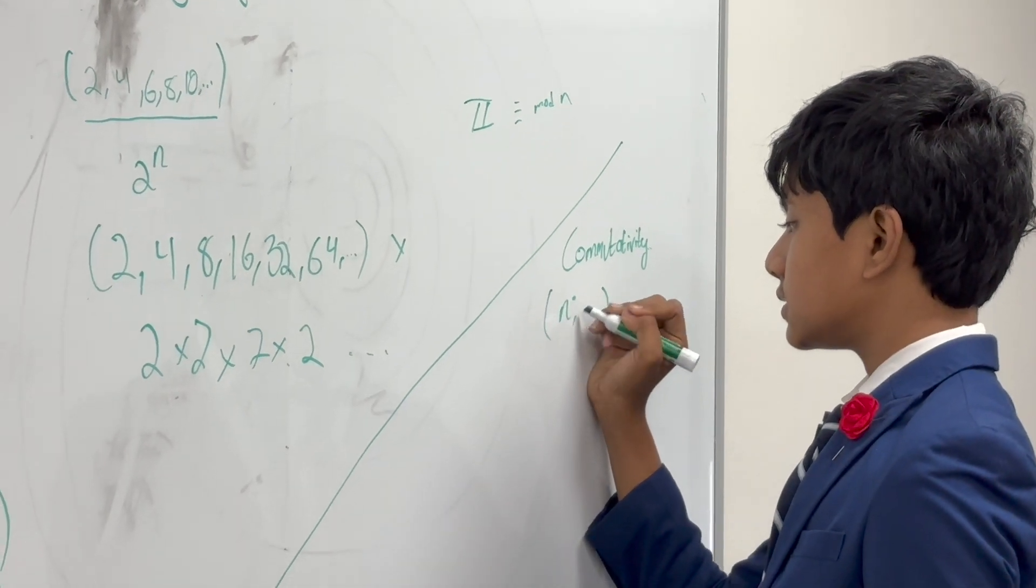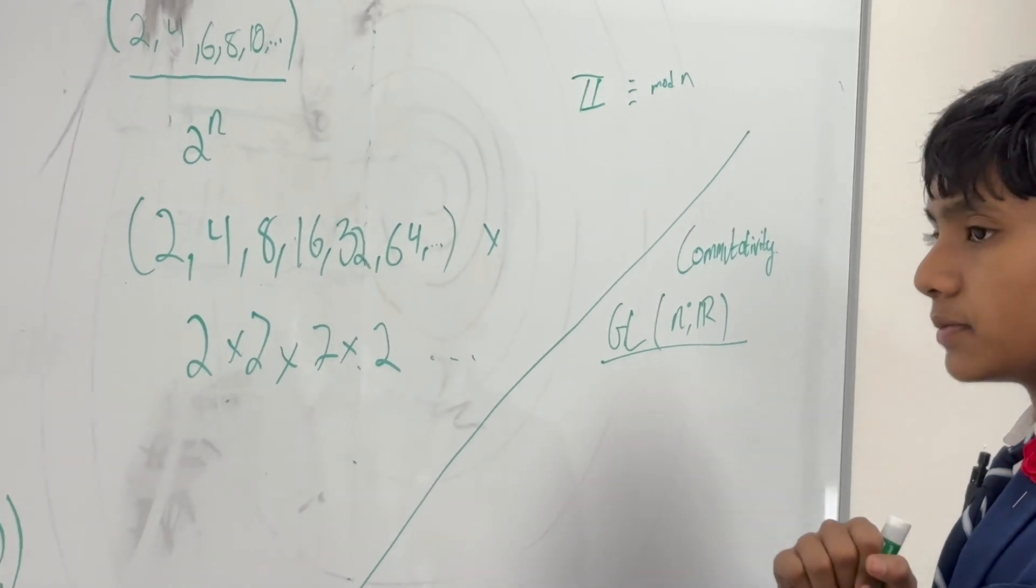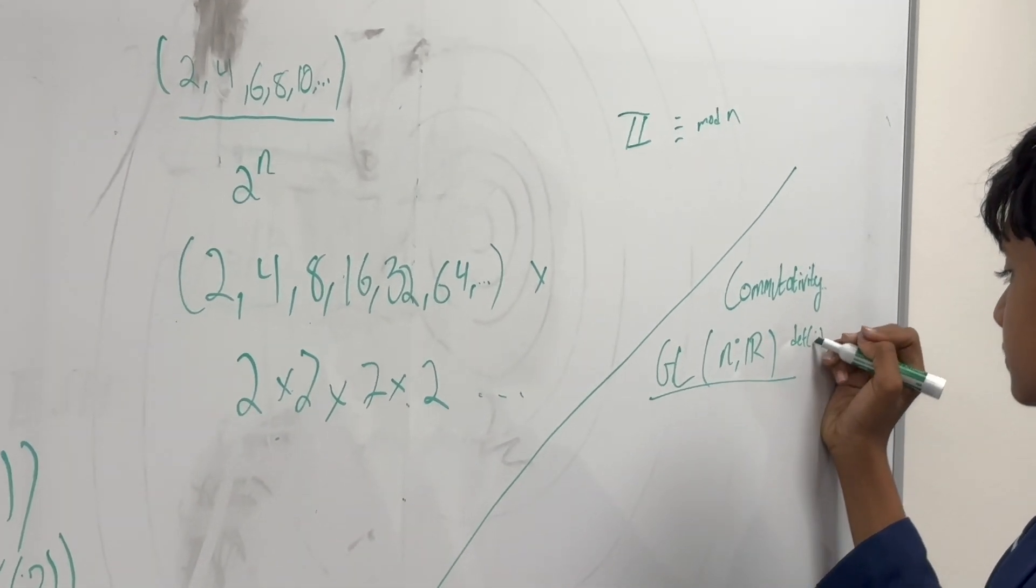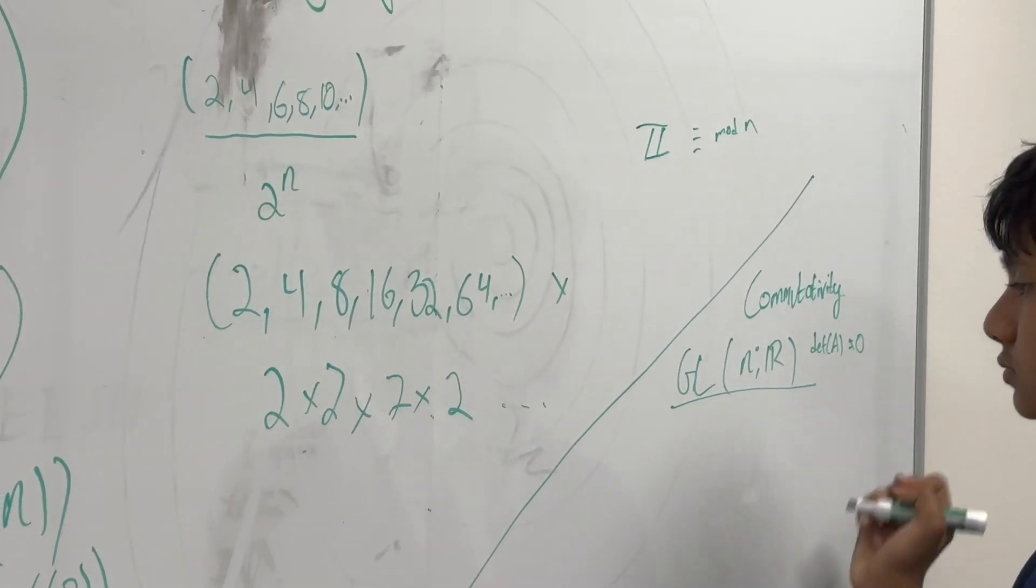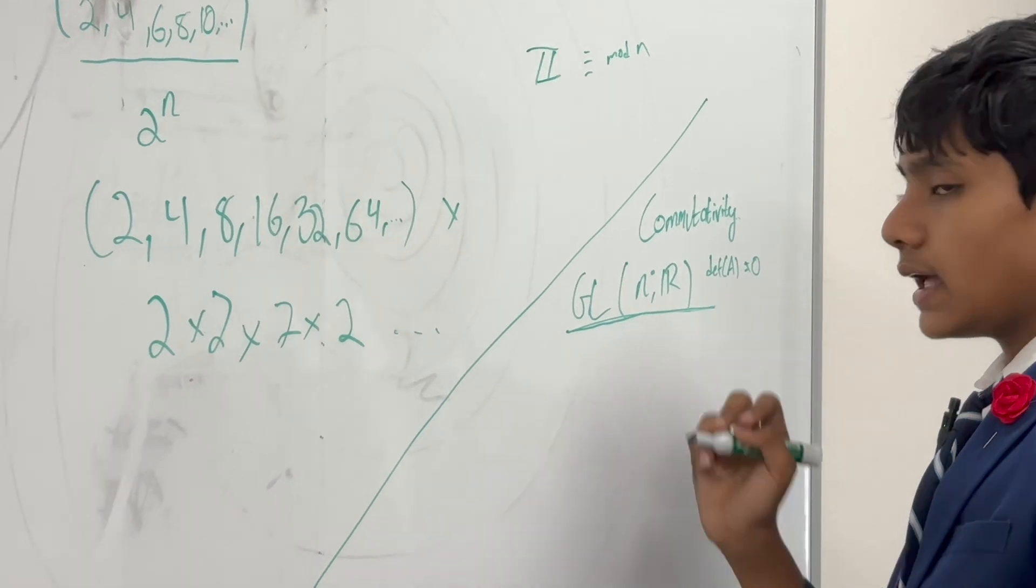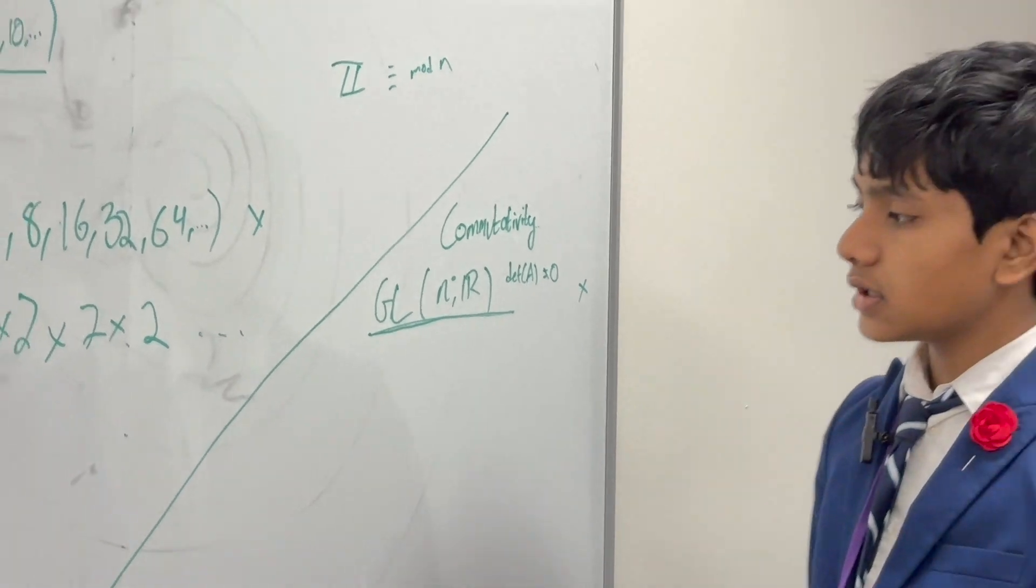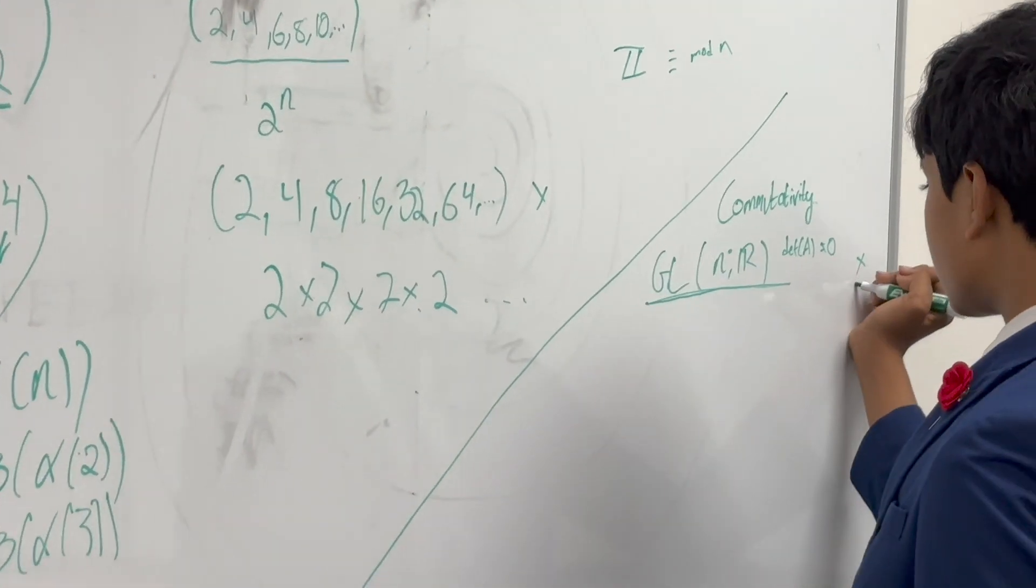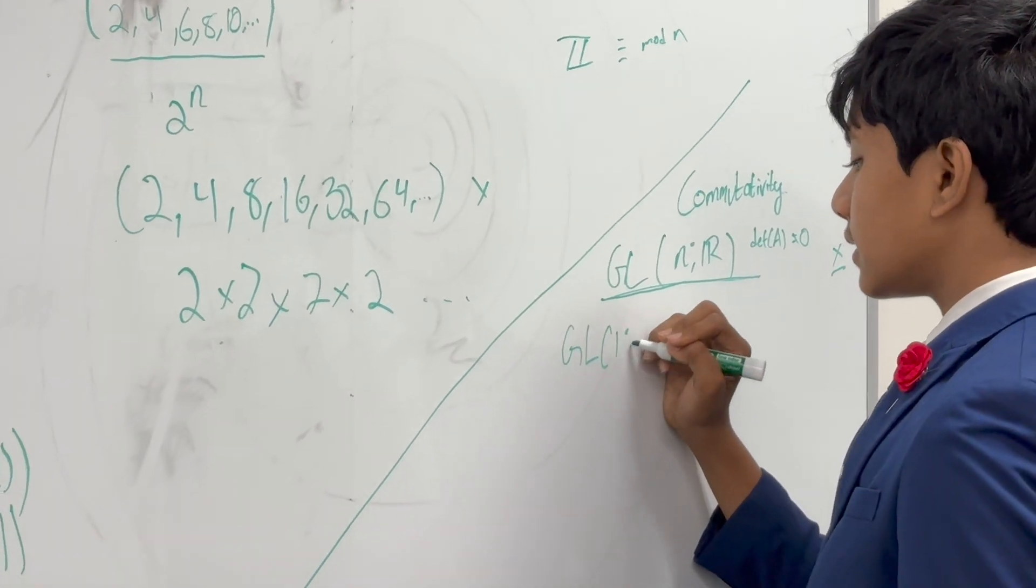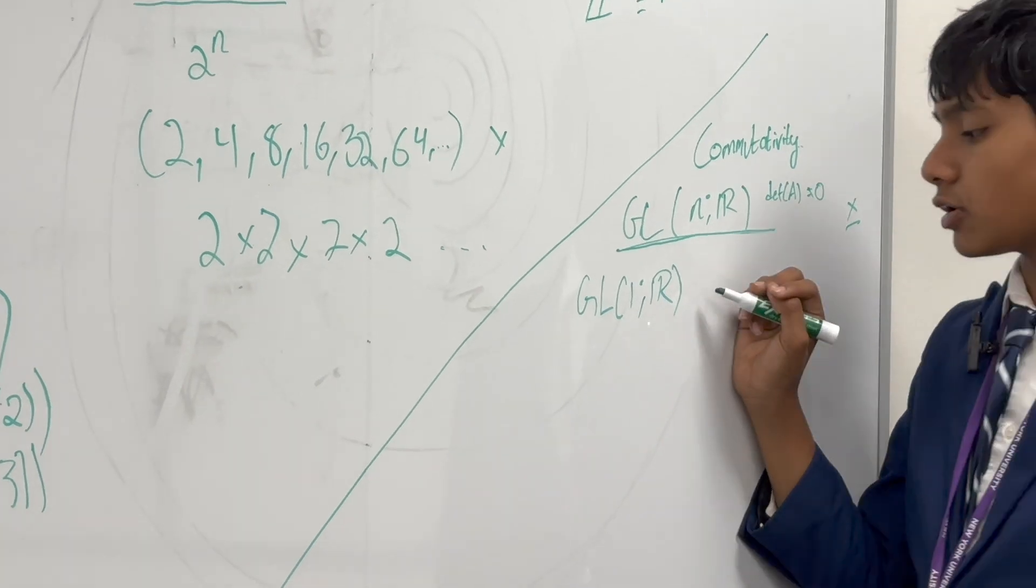So, the set is for all n by n invertible matrices, which means their determinant is not equal to 0. So, this is actually a group, and, of course, the operation we're going to be using is matrix multiplication. So, this, however, is only commutative, meaning the only abelian group of this kind is the 1x1 case, which is literally just scalar multiplication.